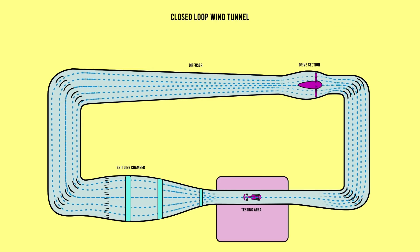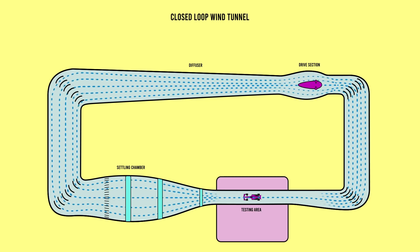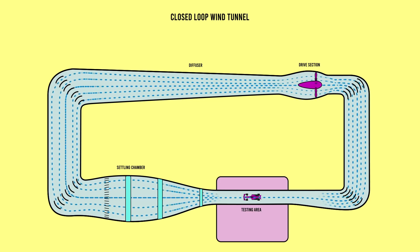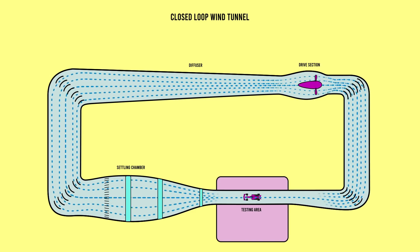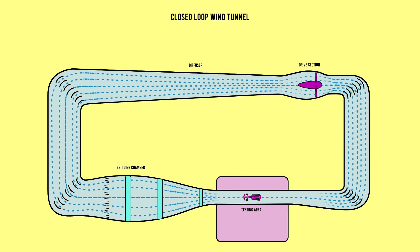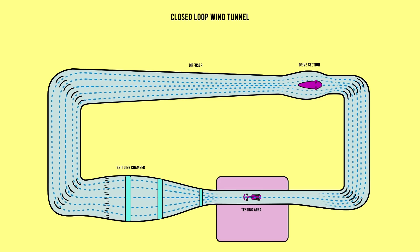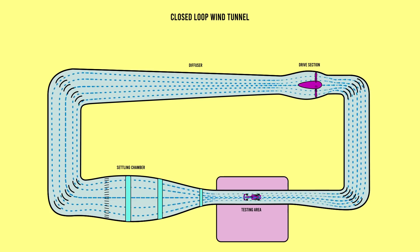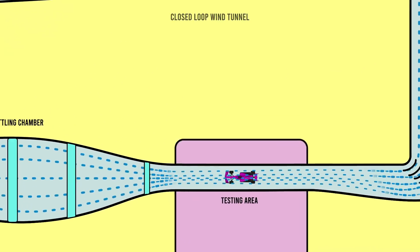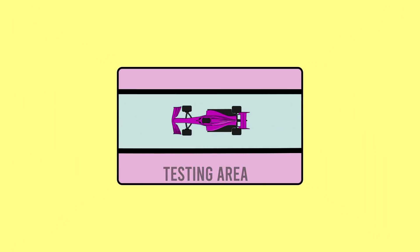The tunnel is then contracted down to its smallest width for the testing chamber. This accelerates the air again as we still have to move the same volume of air per second but through a smaller space. This must be done gradually so as not to introduce more turbulence into the flow by suddenly kicking some velocity into it. And now the air is in the testing chamber rushing over our modelled car at last. At this point it should be clean, smooth and laminar.